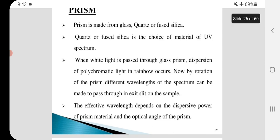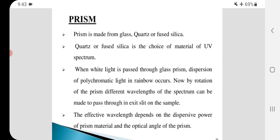Prism is made from glass, quartz or fused silica. Quartz or fused silica is the choice of material of UV spectrum. When white light is passed through glass prism, dispersion of polychromatic light in rainbow occurs.